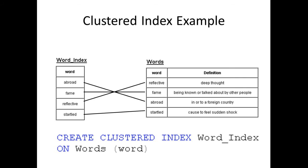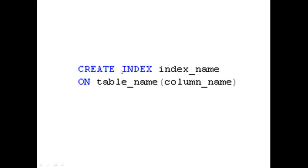Imagine this words table — it can also be called a dictionary table. If that table did not have an index, there would be no order, and you wouldn't be able to retrieve data quickly. When dealing with a database, a clustered index simply sorts records based on a particular column of a table. Now for non-clustered indexes — to create one, the only thing you have to do is remove the CLUSTERED keyword. You would write: CREATE INDEX, then the index name, ON table name, then column name. It's the same syntax, just without the CLUSTERED keyword.